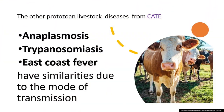The other protozoan livestock diseases from CAT — anaplasmosis, trypanosomiasis, and East Coast fever — have similarities due to the mode of transmission.